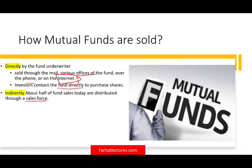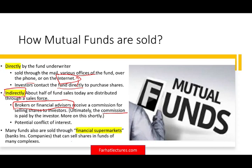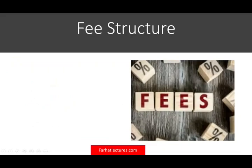You can also buy them indirectly through what's called a salesforce — basically brokers or financial advisors. Those people receive a commission for selling your shares. When you buy indirectly, there could be a potential conflict of interest, because the broker or financial advisor may not be recommending the best fund for you — they might recommend the fund that generates more fees for them. The best way is to read the prospectus. Mutual funds can also be sold through financial supermarkets like banks or insurance companies that can sell shares of many different funds.